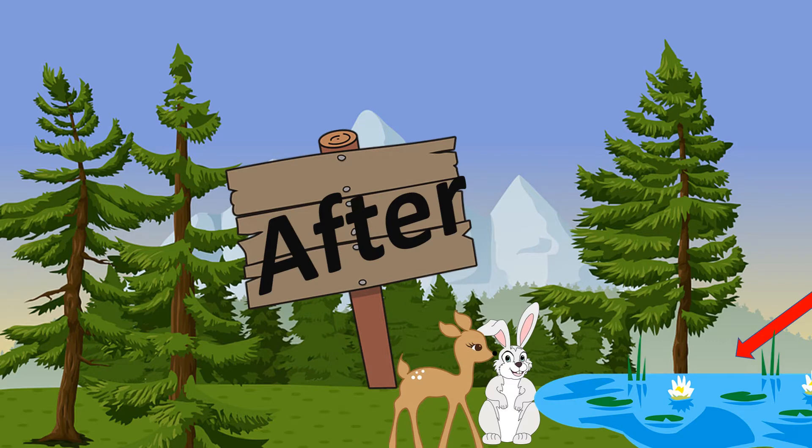Did you observe the rabbit reached the pond first and then Miss Deer reached the pond. So, Miss Deer reached the pond after Mr. Rabbit. After Mr. Rabbit. So, I hope you got the meaning of after now.